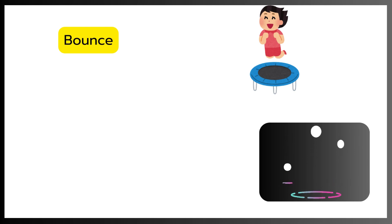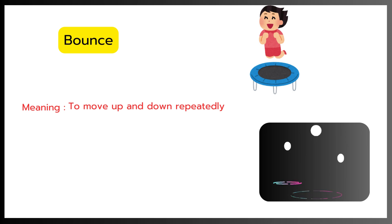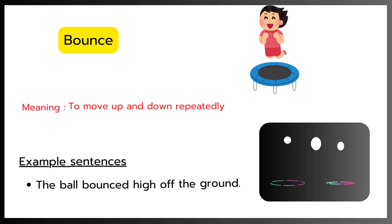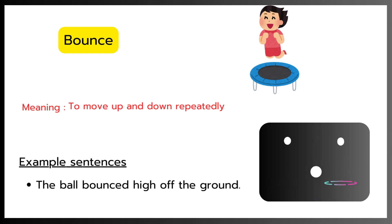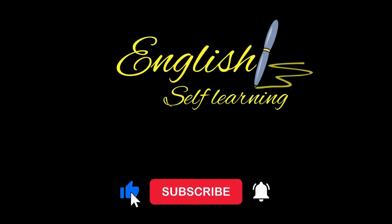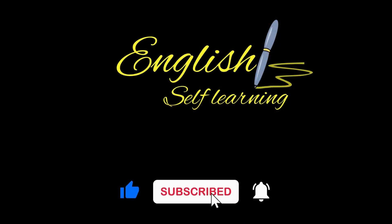Bounce. Meaning: To move up and down repeatedly. Example: The ball bounced high off the ground. Please subscribe to our channel, English Self-Learning, for more educational videos.